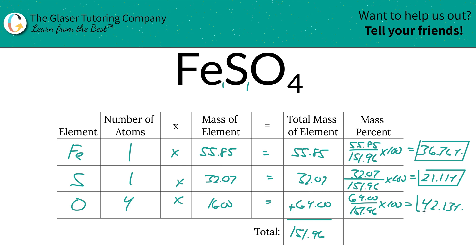If you add these percents together, they should add up to 100 — it's a nice simple way to check yourself. If you added up the exact percents it would equal exactly 100. Since there's rounding here, it might be off by a hundredth, but it really doesn't make a difference. Anyway, that's all. Now you know how to find the percent compositions of each of those elements inside of iron(II) sulfate.